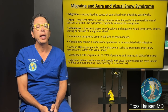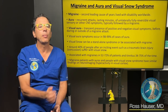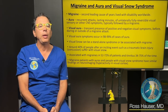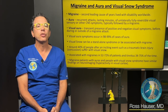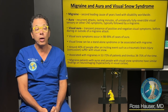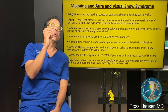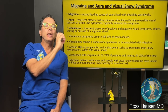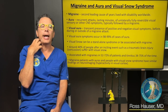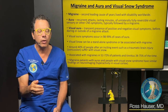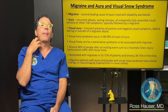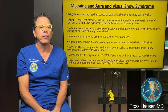Visual snow can be a standalone syndrome or be associated with migraines. Around 40 percent of people after an inciting event such as traumatic brain injury or concussion suffer with visual snow. Whether it's migraines or visual snow, both are so common after neck or head trauma — that's another clue that it's probably related to injury of the neck.